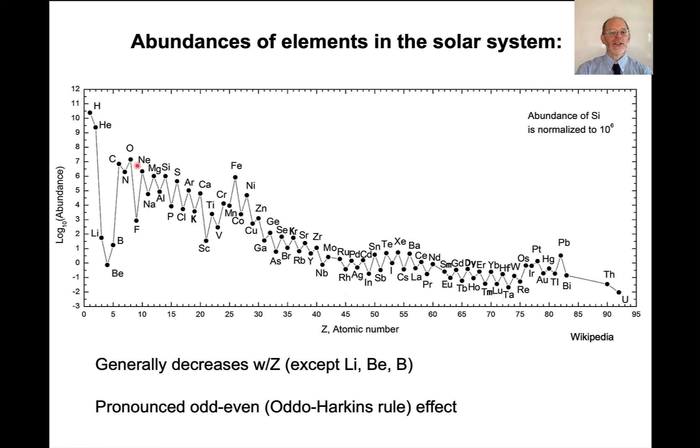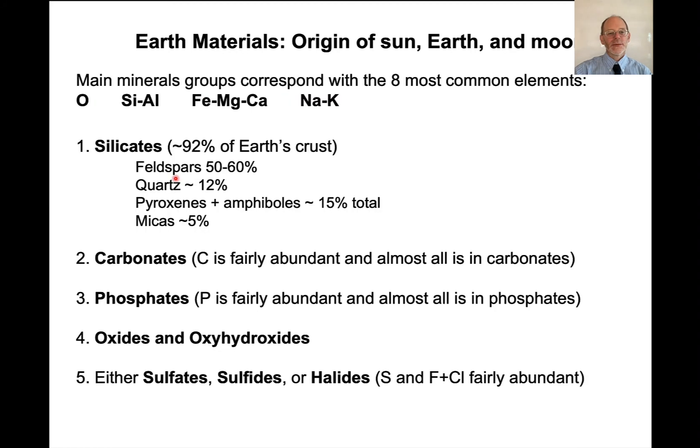But if you look at these other elements, carbon, oxygen, neon's a noble gas, but magnesium, silicon, aluminum, sodium, sulfur, those are the most abundant elements in the solar system because those are the most common products of stellar fusion.